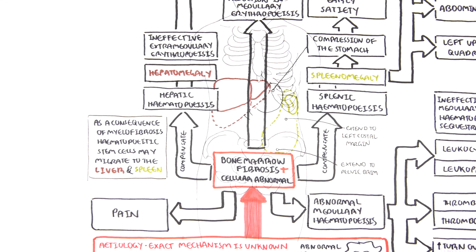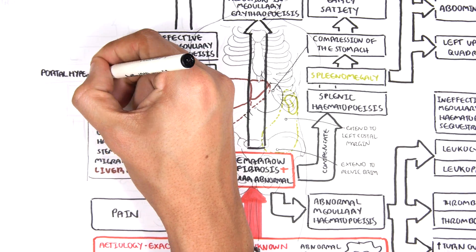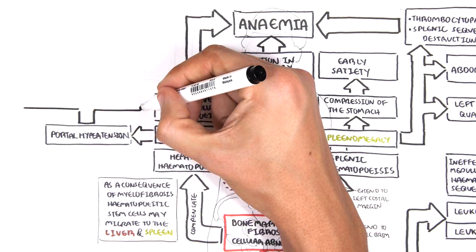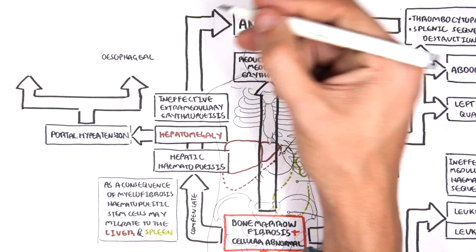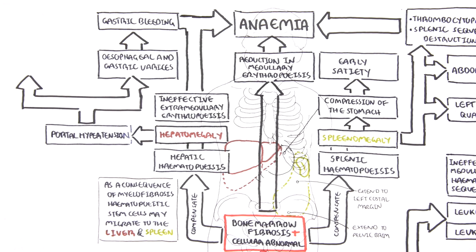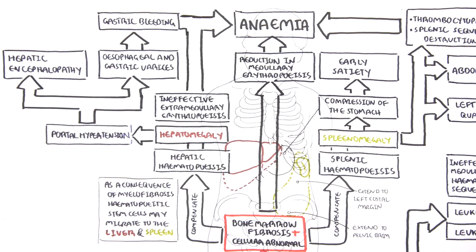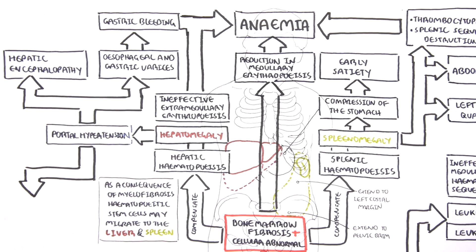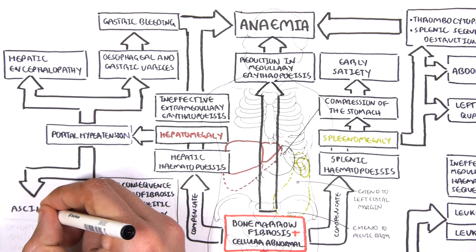Let's go to the other side now and talk about the liver. Hepatomegaly. Remember, hepatomegaly is a common feature in myelofibrosis, a result of extramedullary hematopoiesis. With an enlarged liver, there can be portal hypertension. Portal hypertension leads to a few things. It causes esophageal and gastric varices, which can lead to gastric bleeding, and thus contribute to anemia when you lose blood. Portal hypertension can also lead to hepatic encephalopathy in later stages. Portal hypertension can also cause ascites, which can predispose one to spontaneous bacterial infection of the peritoneum.